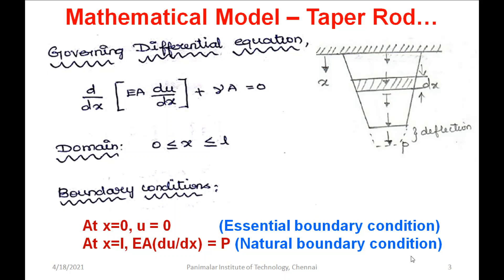For any field problem, two types of boundary conditions may occur: essential and natural. When the boundary is defined in terms of the field variable itself, it is essential. When the boundary is defined by derivatives of the field variable — first order, or higher orders like in a beam problem — it is called the natural boundary condition.